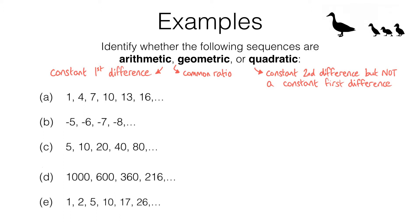Let's have a look at sequence A. In this sequence we have a constant first difference. Let me illustrate what the first differences are. To go from 1 to 4 I need to add 3, so that difference is 3. To go from 4 to 7 I need to add 3. To go from 7 to 10 I need to add 3, and these differences will also be 3. The sequence is going up in steps of 3, so the difference between consecutive terms is just 3 — a constant first difference.